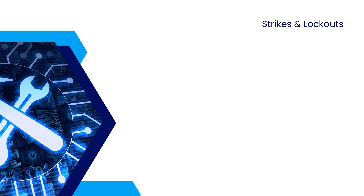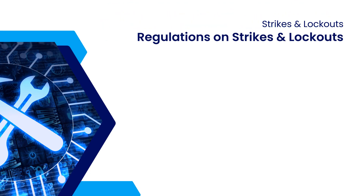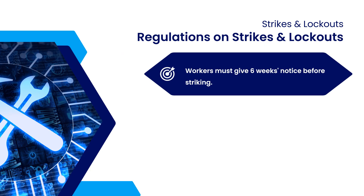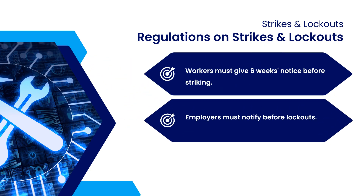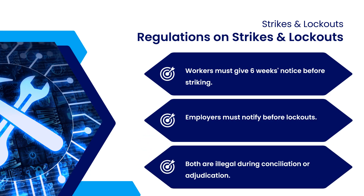Strikes and lockouts can seriously disturb the economy, so the act strictly regulates them. Workers must give a notice before going on strike, and similarly, employers must give a notice before declaring a lockout. This ensures that both parties get a chance to resolve the issue before stopping work. Strikes and lockouts are illegal during conciliation or adjudication proceedings.